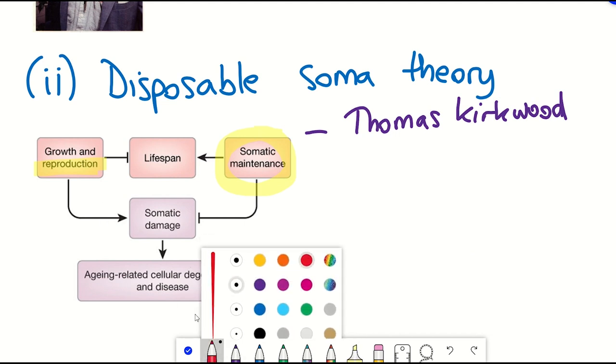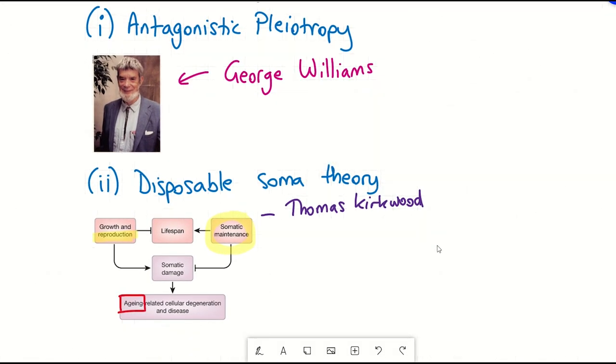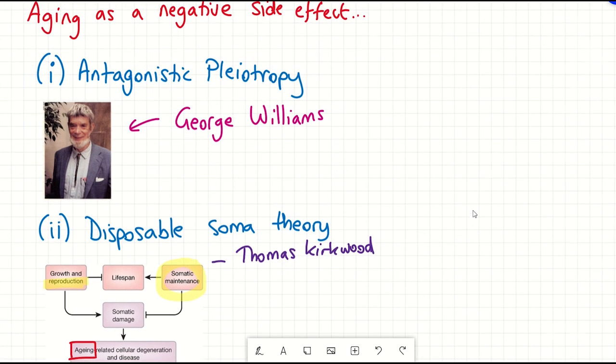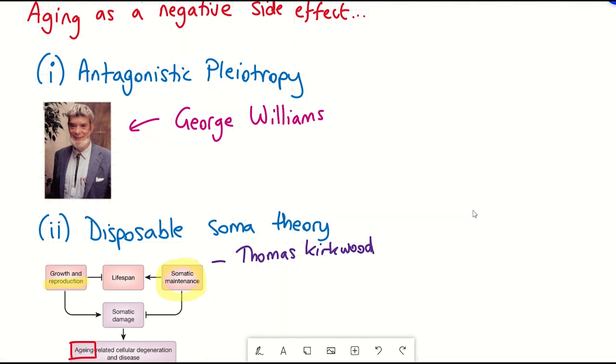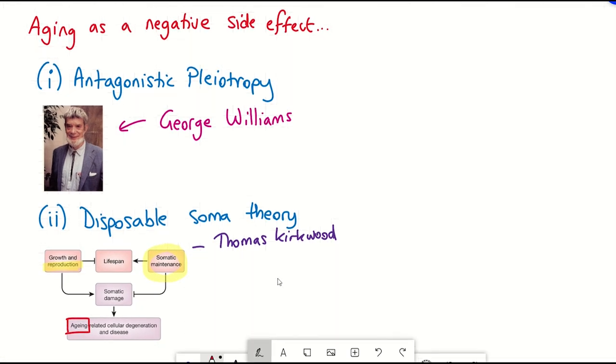As a result, the soma, the body, undergoes wear and tear over time, leading to aging and eventual decline. So this theory suggests organisms have a use-it or lose-it approach to resources, prioritizing immediate reproductive success over long-term somatic maintenance. So again, highlighting that there may be these evolutionary trade-offs between reproduction and the long-term survival and maintenance of the body.